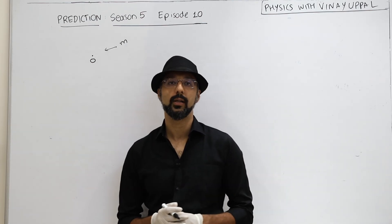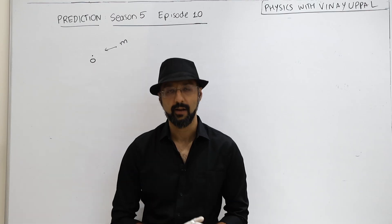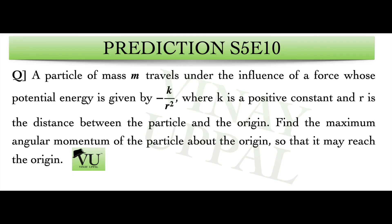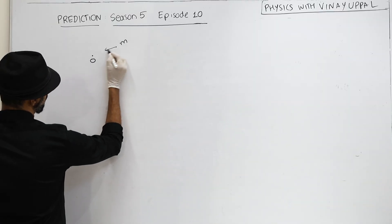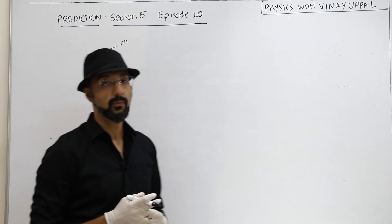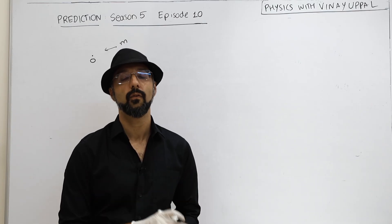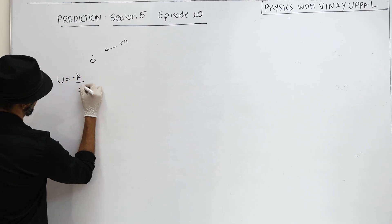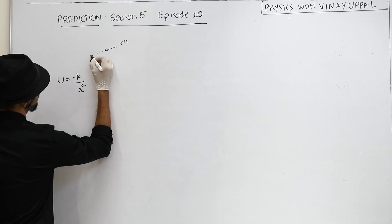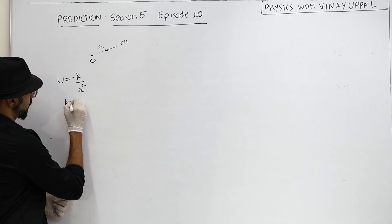I am going to bring you a question based on this concept of central force. You can pause the video and try it out. The question says that a particle is moving under the influence of a force whose potential energy is given by U = -K/R². This distance is R, and K is some positive constant.